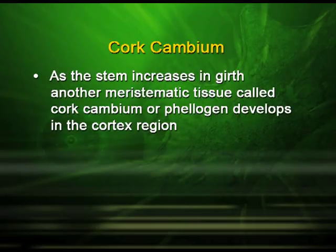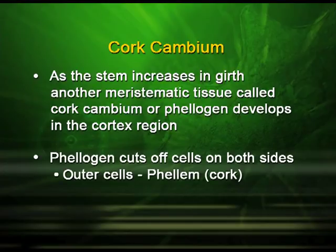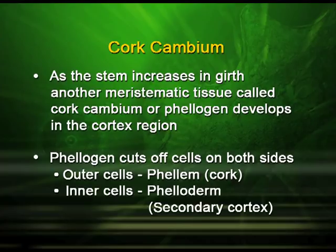Cork cambium plays a very important role in secondary growth. As the stem increases in girth, another meristematic tissue called cork cambium or phellogen develops in the cortex region. The phellogen cuts off cells on both sides. The outer cells are known as the phellum, which is the cork. The inner cells are the phelloderm, which is the secondary cortex.